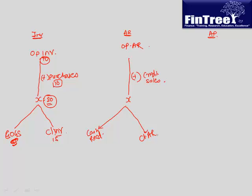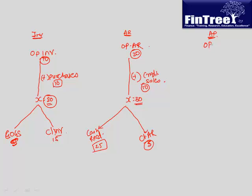Let's do an example. Opening accounts receivable is 20, trade sales during the year were 10, and closing accounts receivable is only 5. How much is cash received? It's 25 — because 20 plus 10 gives X of 30, and if closing is only 5, cash received must be 25. Again, four variables: know any three to find the fourth.